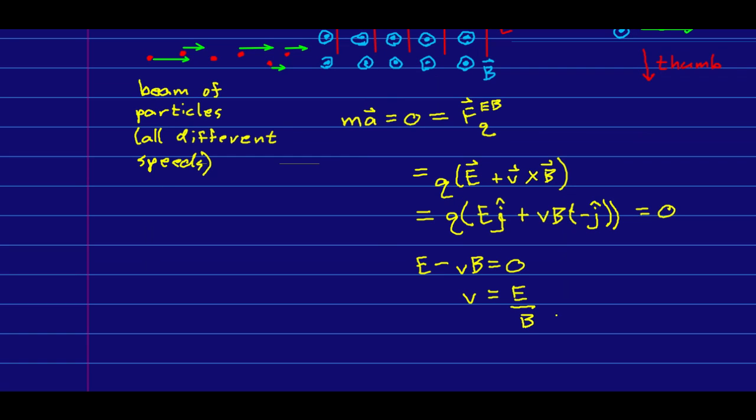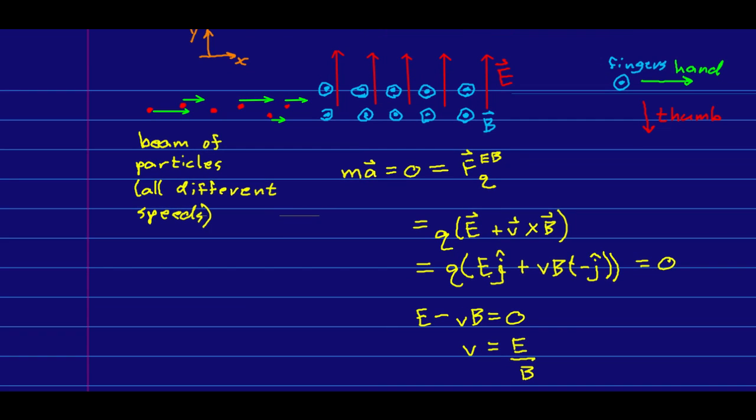So this is the condition for particles to be able to move straight through. And notice the condition has to do with the speed. Only particles going at a certain speed will pass through here undeflected. And so we call this a velocity selector.